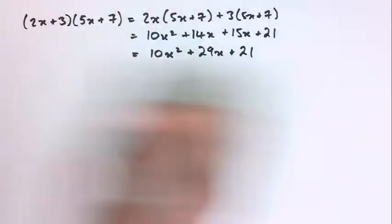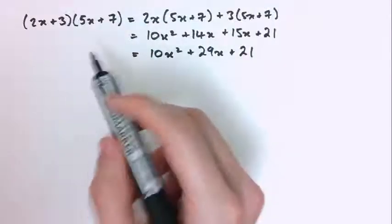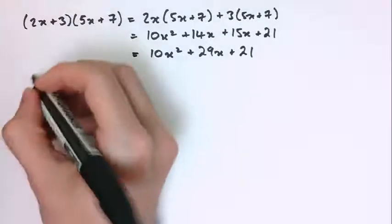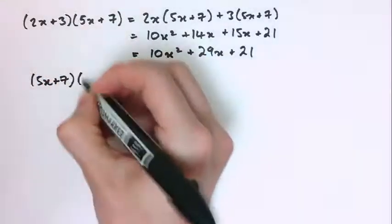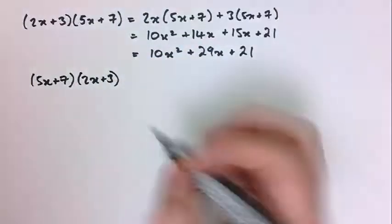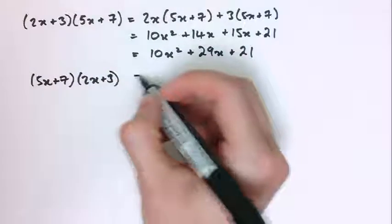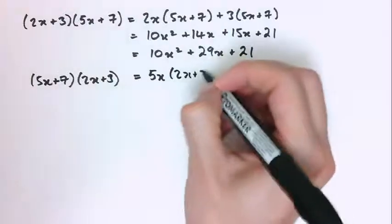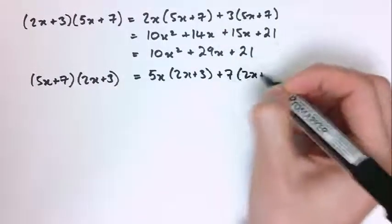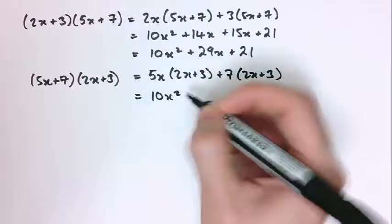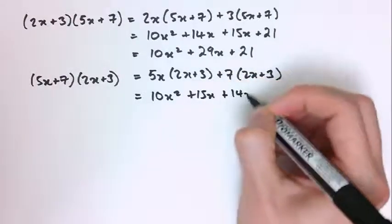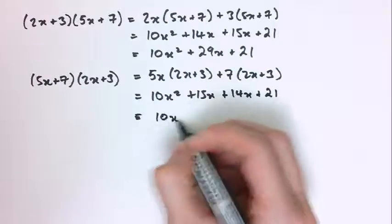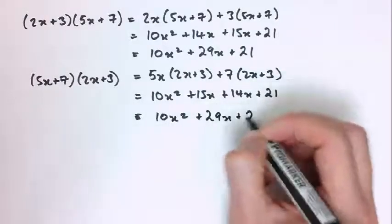Because multiplication can be done either way around, I could do (5x + 7) times (2x + 3) instead and get the same thing — just as 3 times 5 equals 5 times 3. So I could say 5x times (2x + 3) plus 7 times (2x + 3), giving 10x squared plus 15x plus 14x plus 21 — the same terms, just in a different order — still 10x squared plus 29x plus 21.